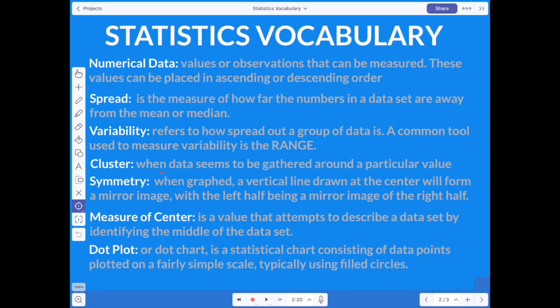A cluster is when data seems to be gathered around one particular value. So let's go back to our age example. Most of our ranges are probably going to be grouped around 11 or 12. I think most of y'all are 11 or 12. So you probably won't have too many 13s. You definitely won't have any 14s or 15s. So all that data is going to be clustered around 11 and 12. Symmetry is when you graph your data, a vertical line that's drawn at the center will form a mirror image with the left half being a mirror image of the right half. So it's just a line that's drawn right in the middle, and you have the same amount on both sides.